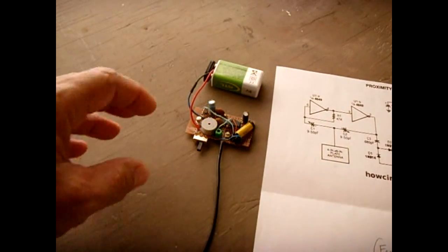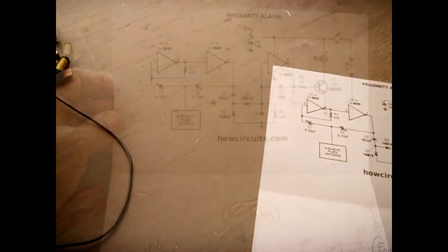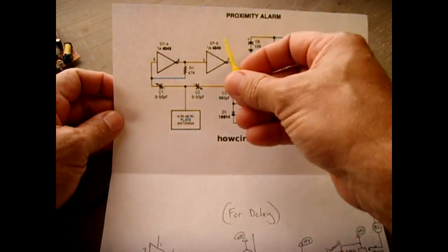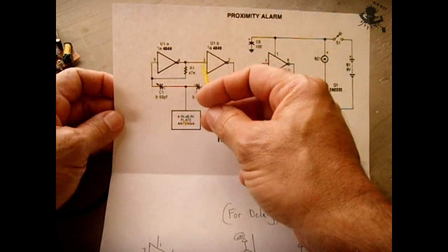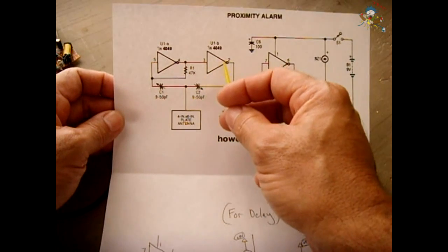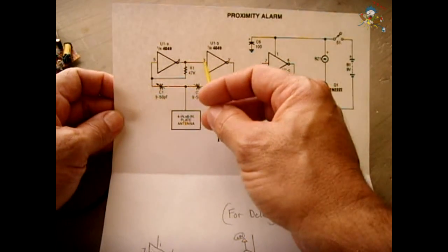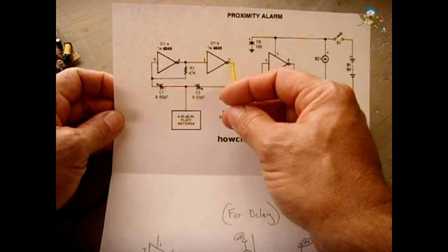Let me show you the schematic first before I get into this. The circuit is based on a 4049 IC, which is an inverter IC. Whatever the input is on the inverter, if it's high, the output will become low. If it's low, then the output will become high.